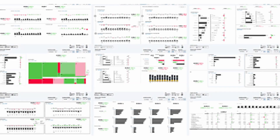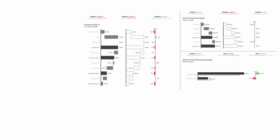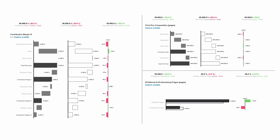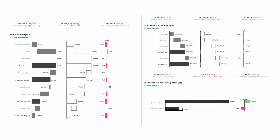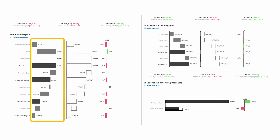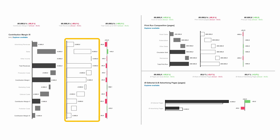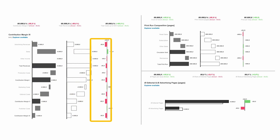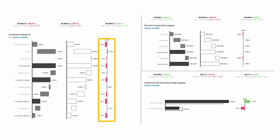Here is another example: a waterfall chart created in SAP Analytics Cloud. It's a contribution analysis of magazine revenues and costs — revenue items, total revenue, costs. The first column shows the actuals. We also have budget and variances — very IBCS-compliant as well.